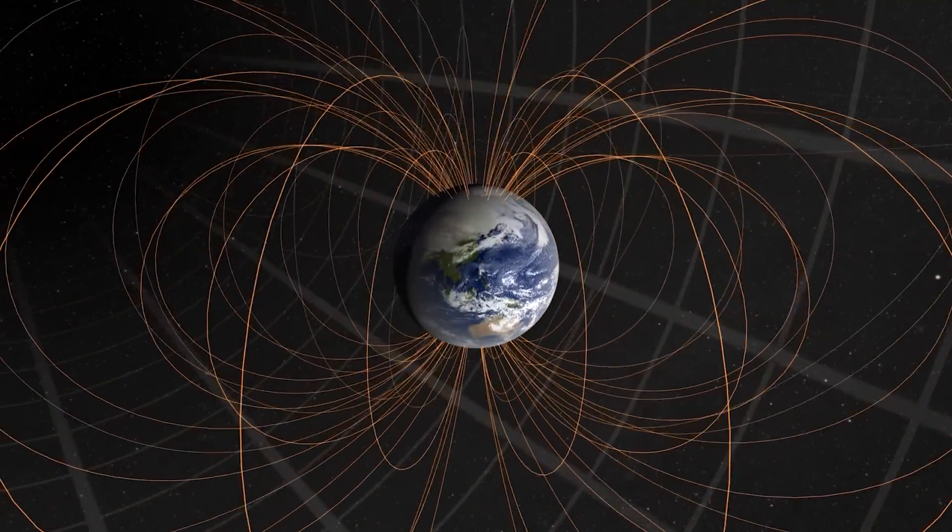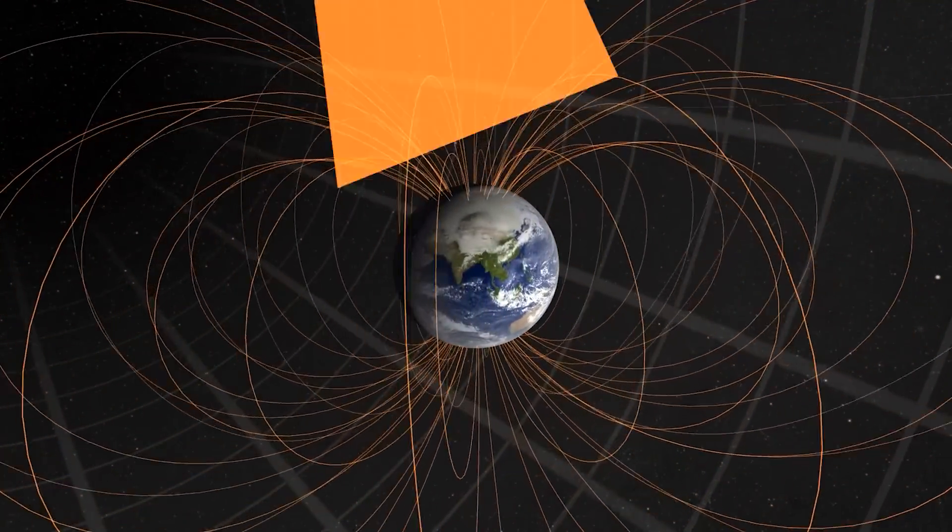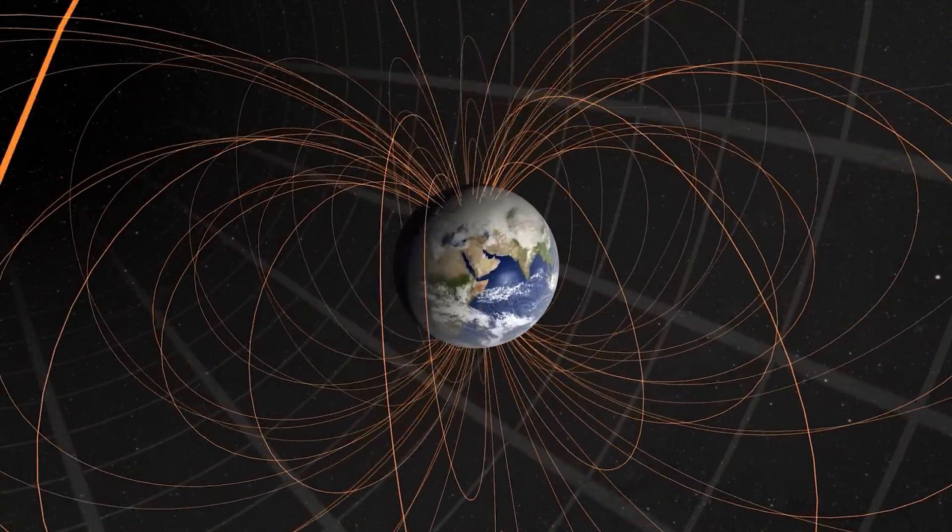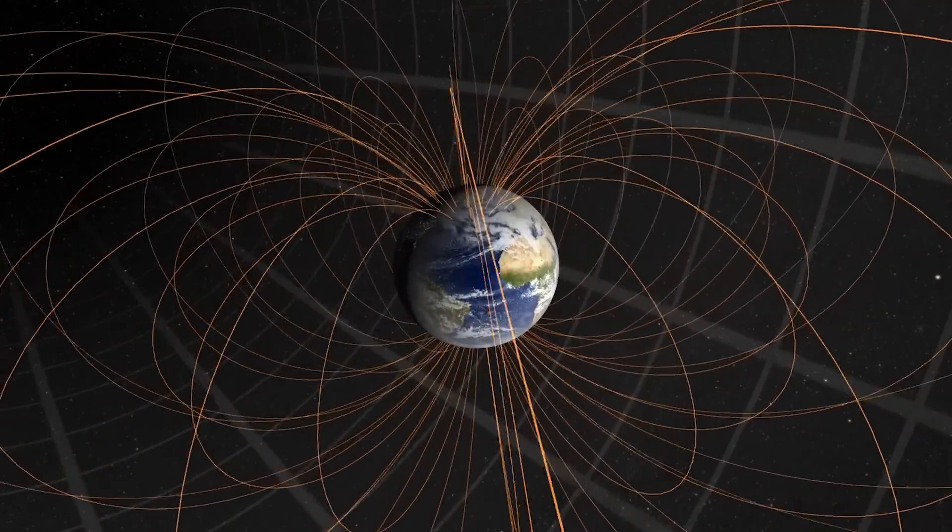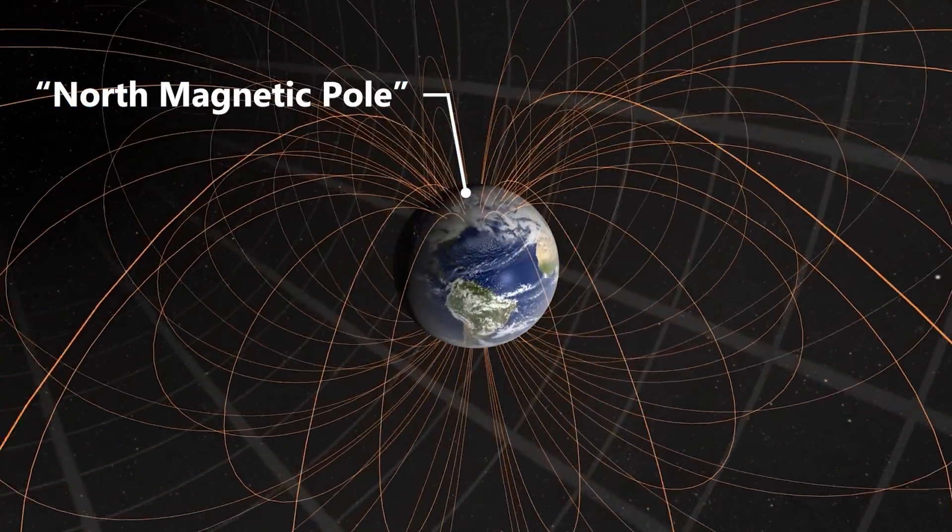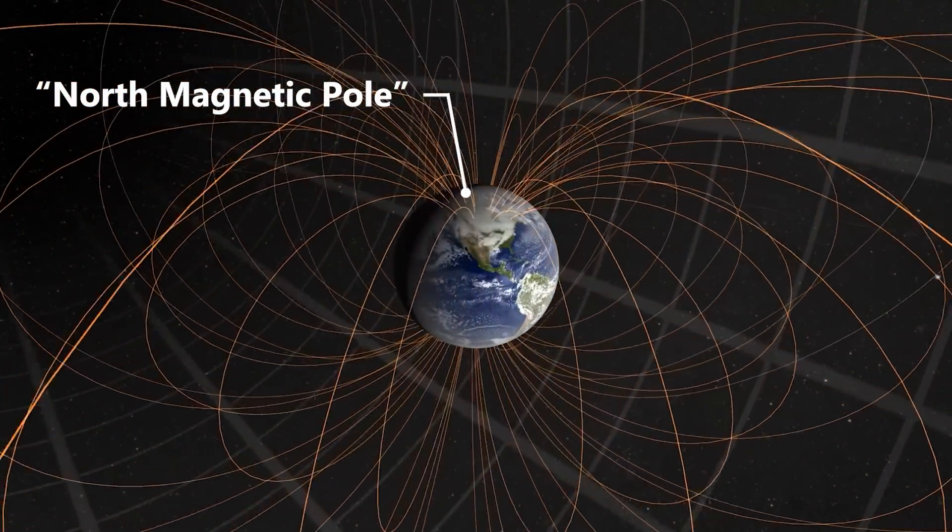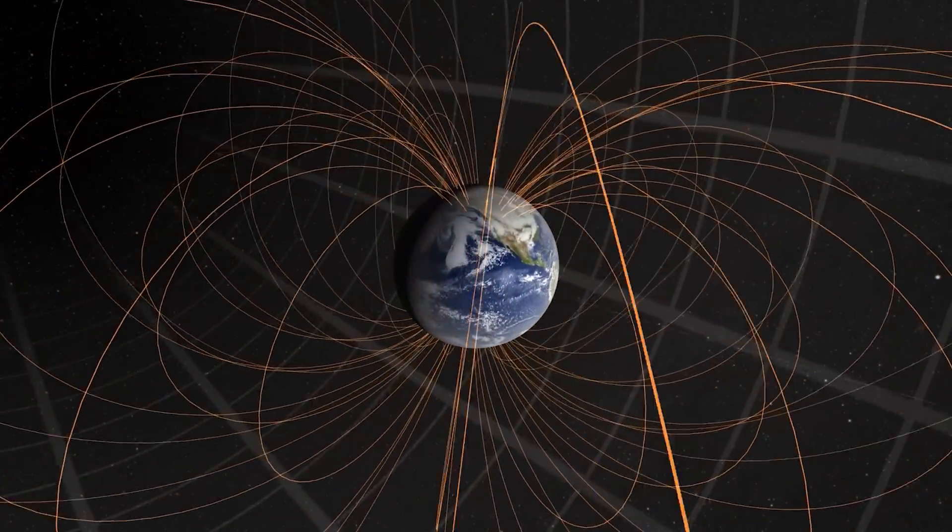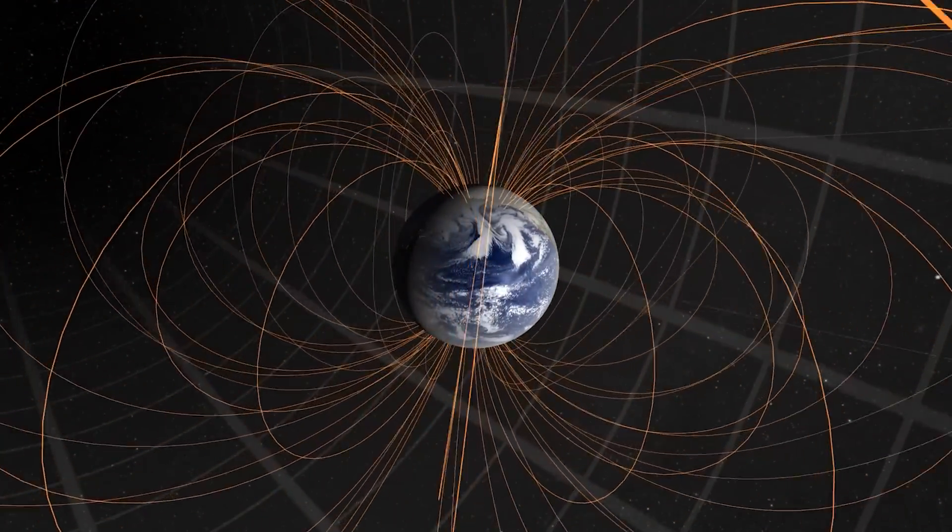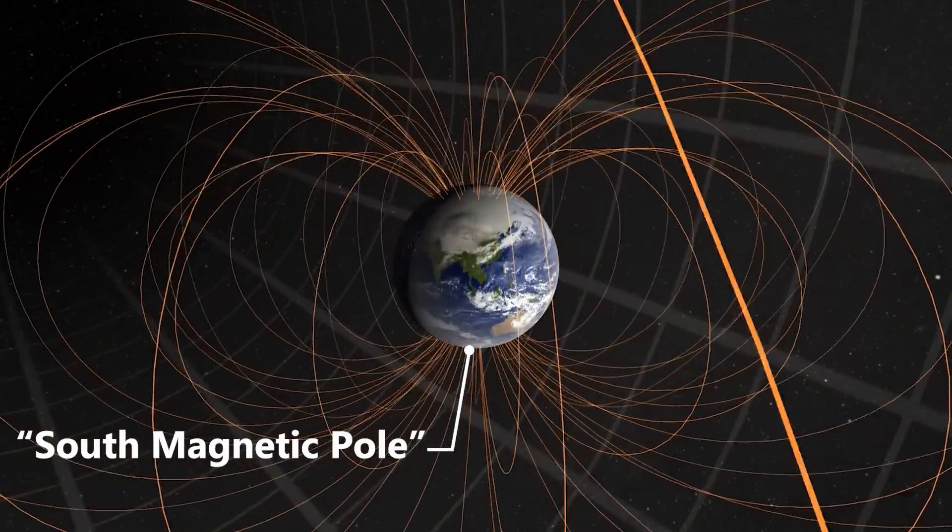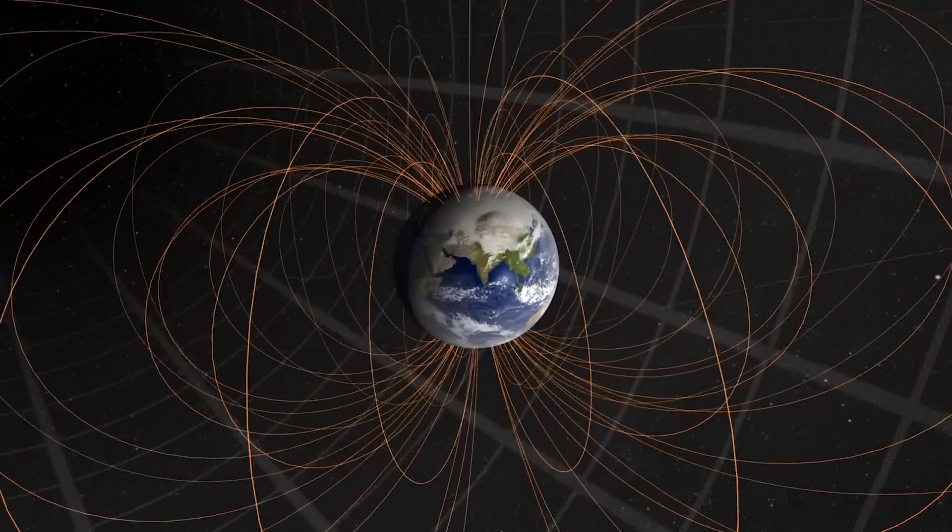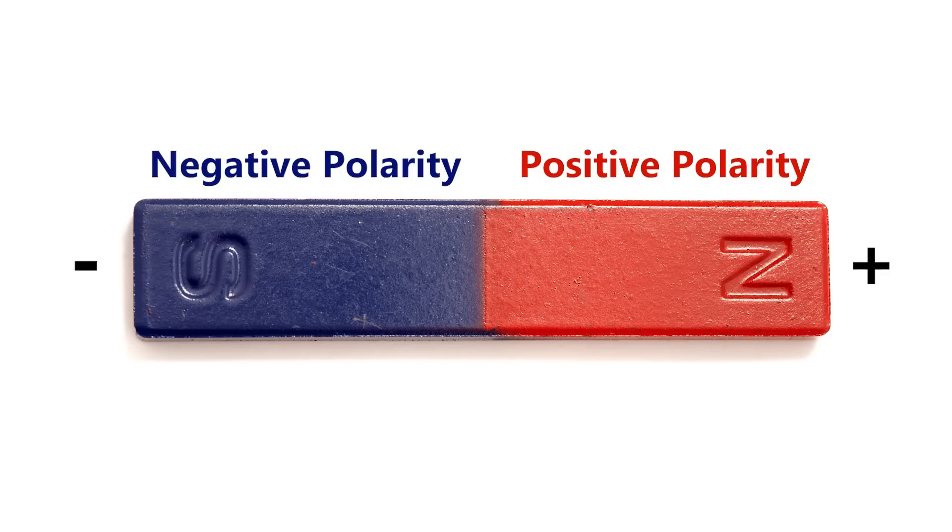An important terminology clarification to cover at this point to avoid future confusion is the naming of Earth's magnetic poles. Throughout history, the magnetic pole in the northern hemisphere has been called the north magnetic pole because the north end of a compass needle is pointing towards it. Likewise, the magnetic pole in the southern hemisphere is most commonly called the south magnetic pole because the south end of a compass needle is pointing south towards it. And in general, a negative polarity pole is sometimes called a south pole, whereas a positive polarity pole is sometimes called a north pole.